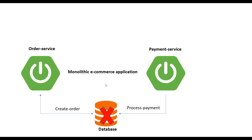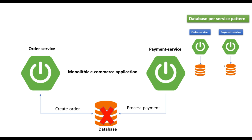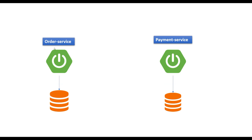Spring Framework provides enough features to handle transactions in monolithic applications. However, microservices do not follow this principle — microservices basically follow a pattern called database-per-service, where the order service has its own database and the payment service has its own database. If both services pointed to a single database, the approach would be the same as monolithic, but that's not the case here.